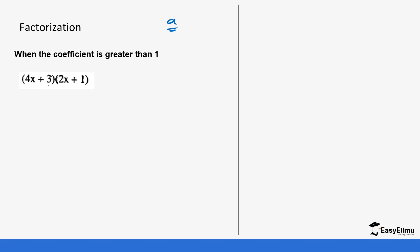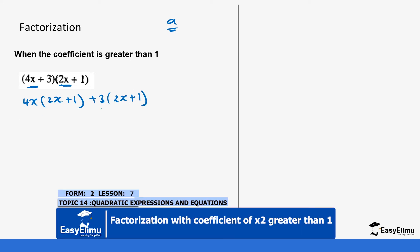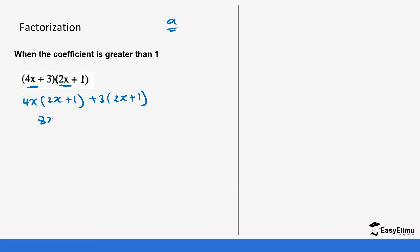Let's expand this expression first so we can use it to work backwards. It's going to be 4x times (2x + 1) plus 3(2x + 1). We did this expansion in the previous videos — you can go back and check. This gives us 8x² + 4x + 6x + 3, which becomes 8x² + 10x + 3.